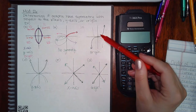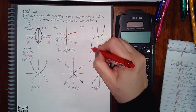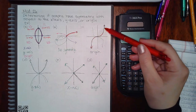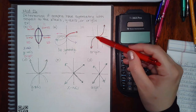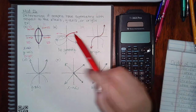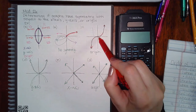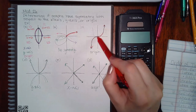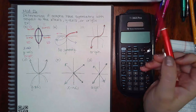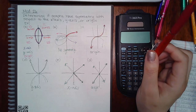For this curve, this is the original. If I flip over the x-axis, this part becomes this curve and this part becomes this curve, but that green curve does not land on the original red curve, so it does not have symmetry with respect to the x-axis. If I flip the curve over the y-axis, the green graph again does not land on the red original graph, so it does not have symmetry with respect to the y-axis.